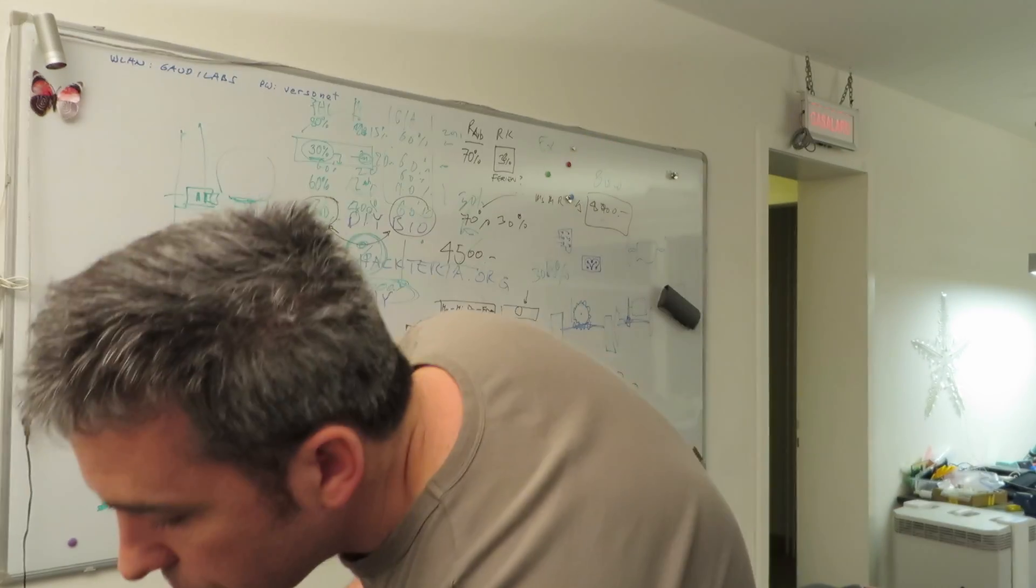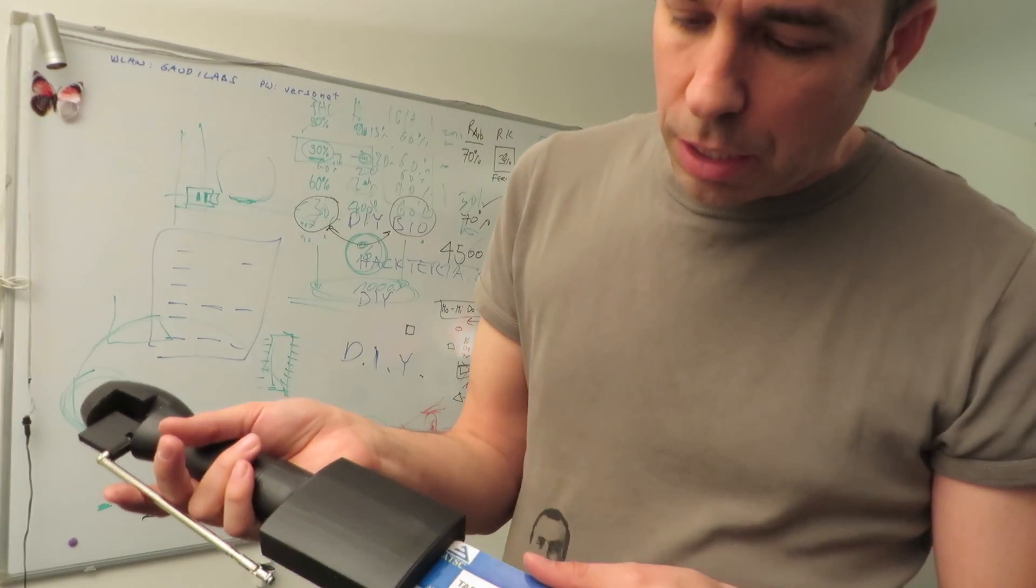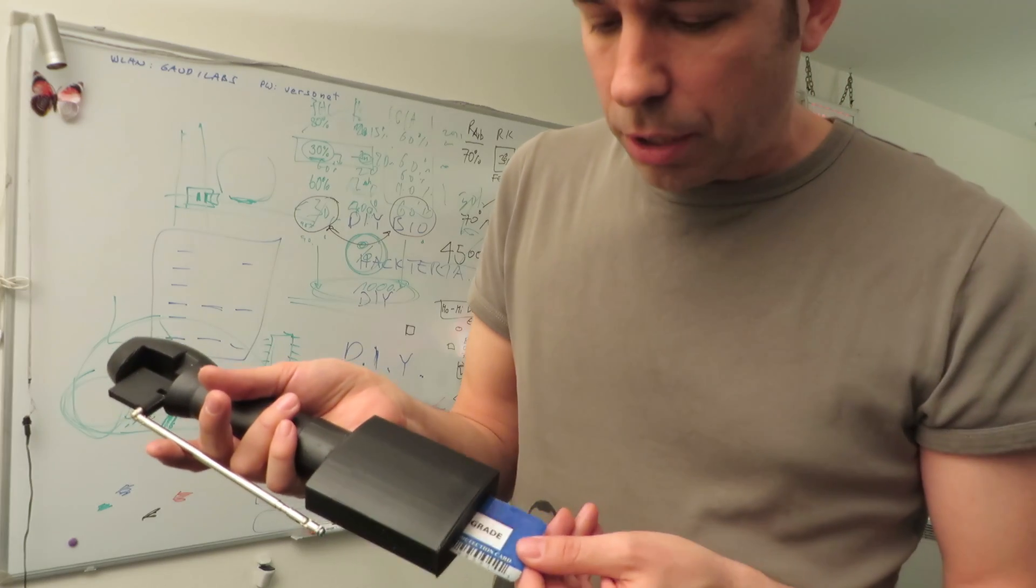So what you do, there is on the bottom of the device a slit and you put this card in the slit like this.